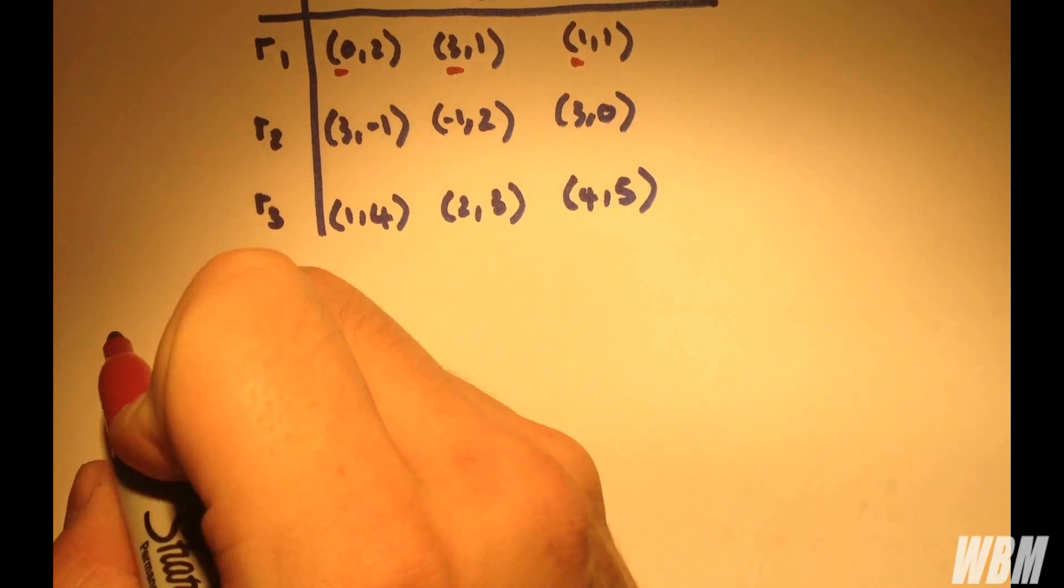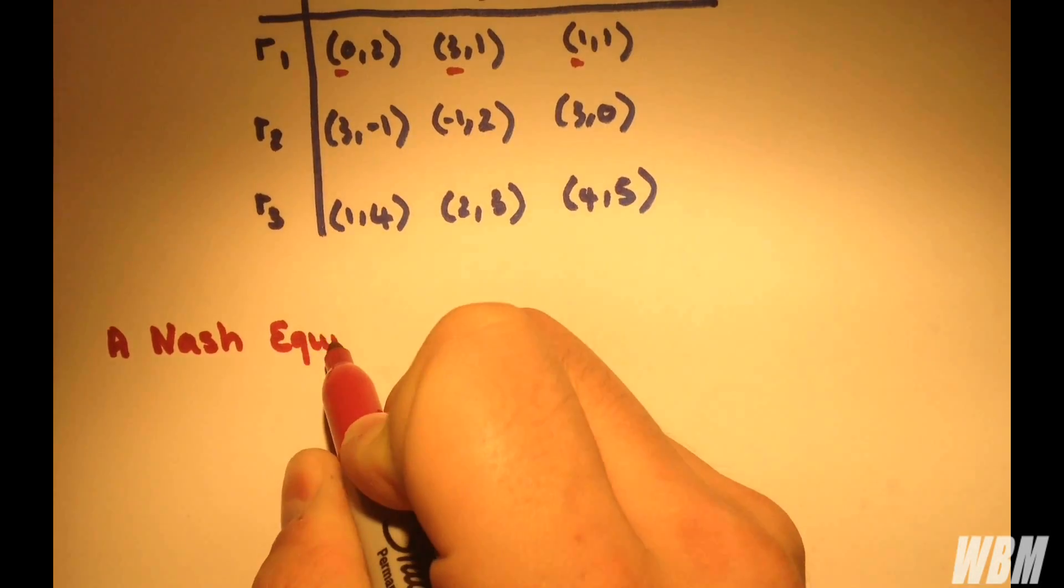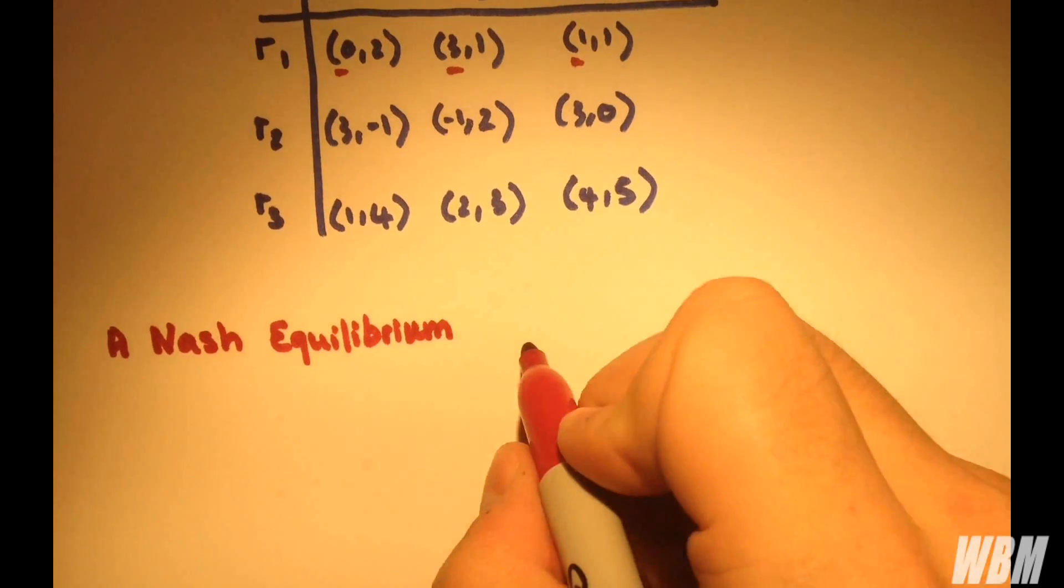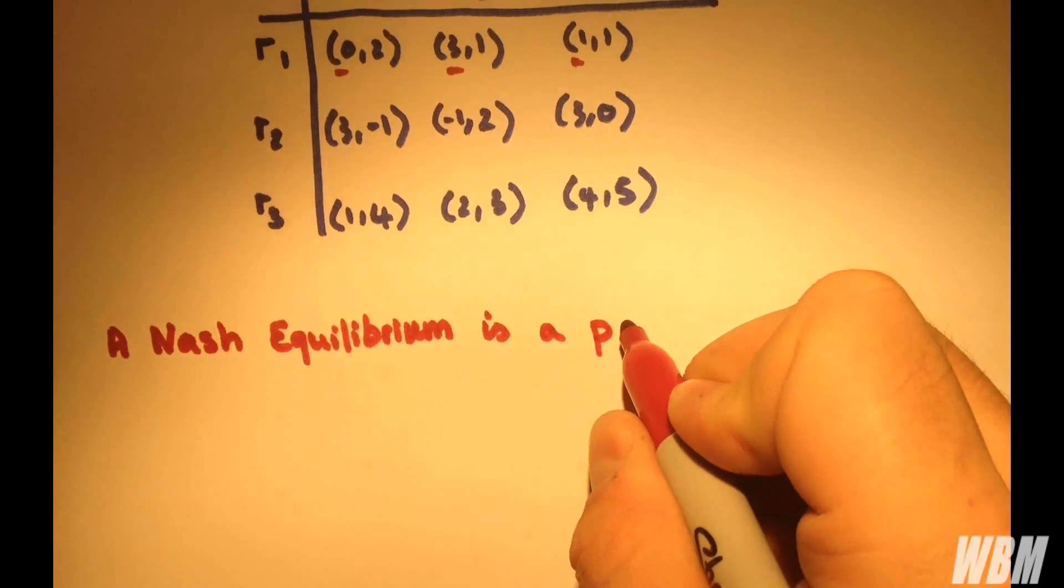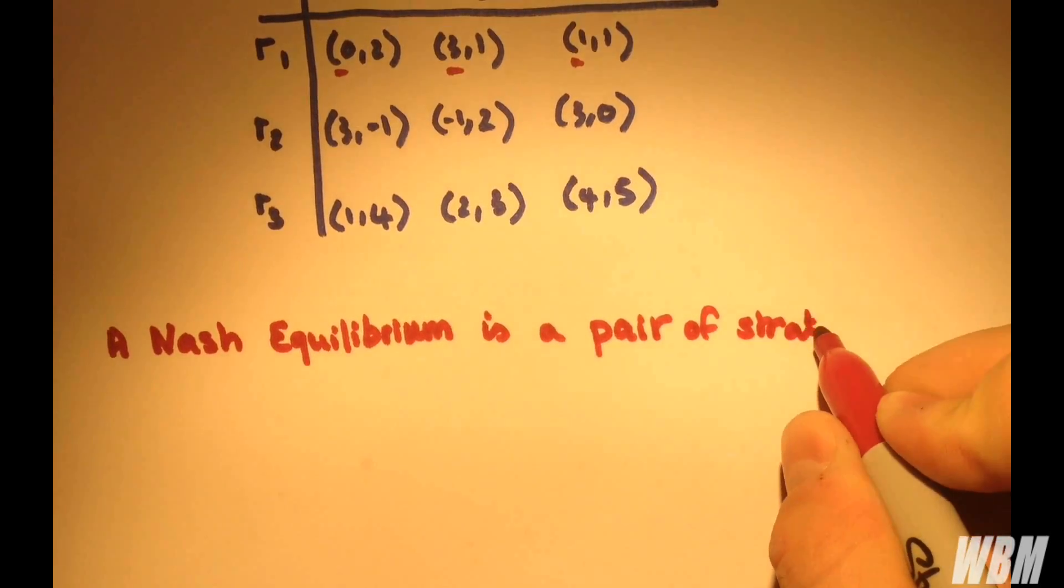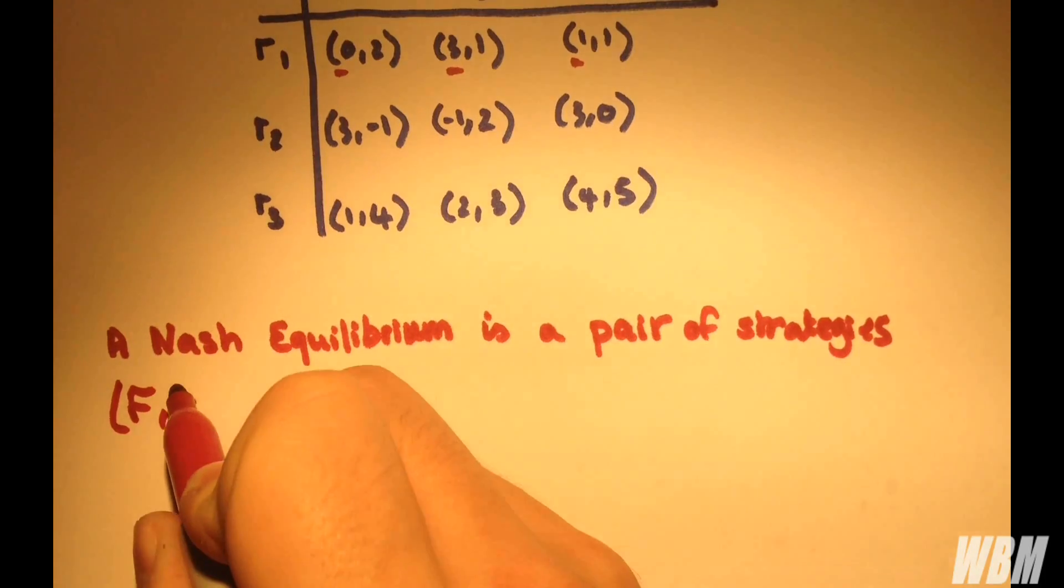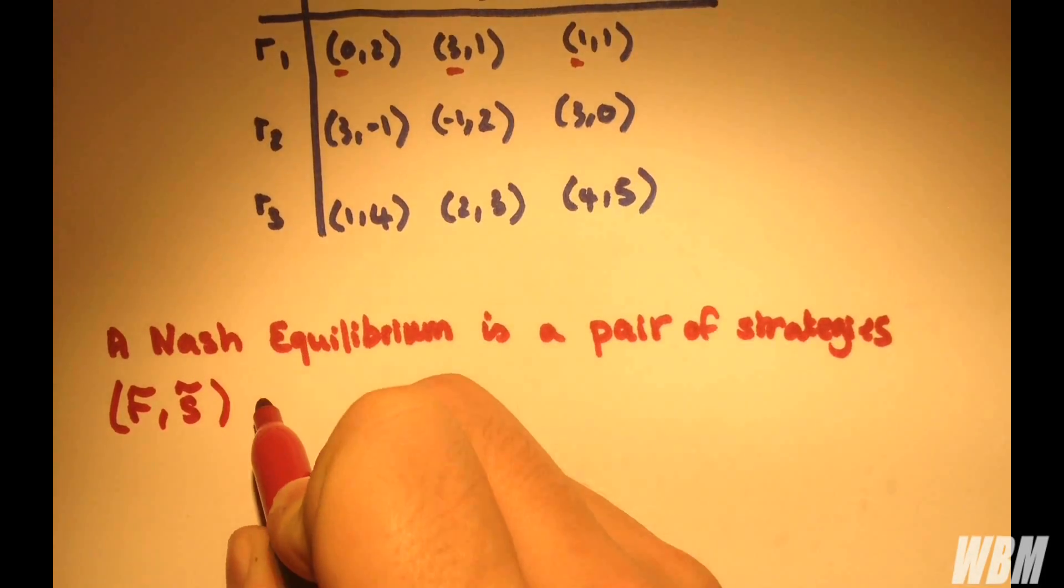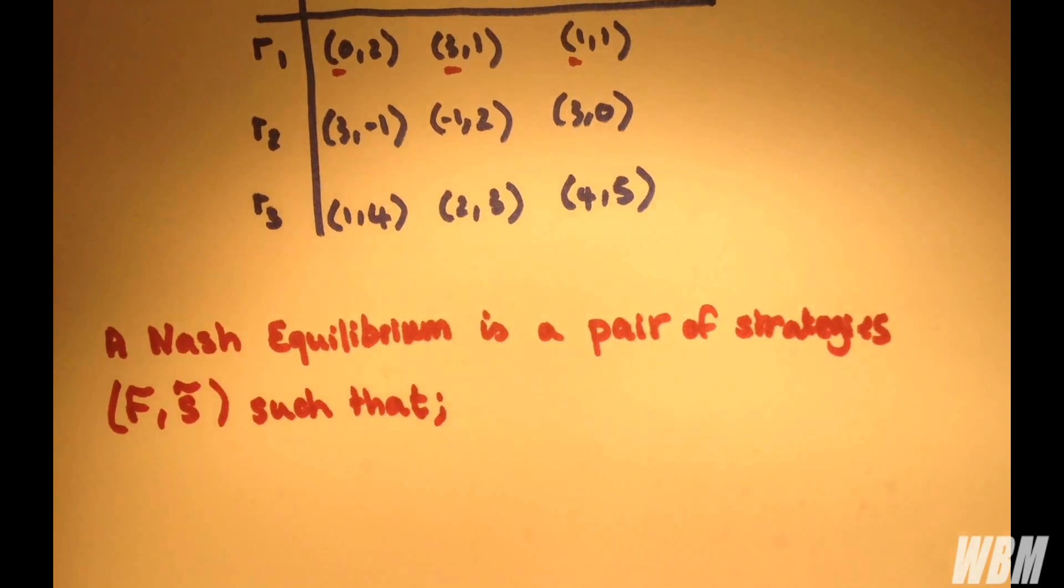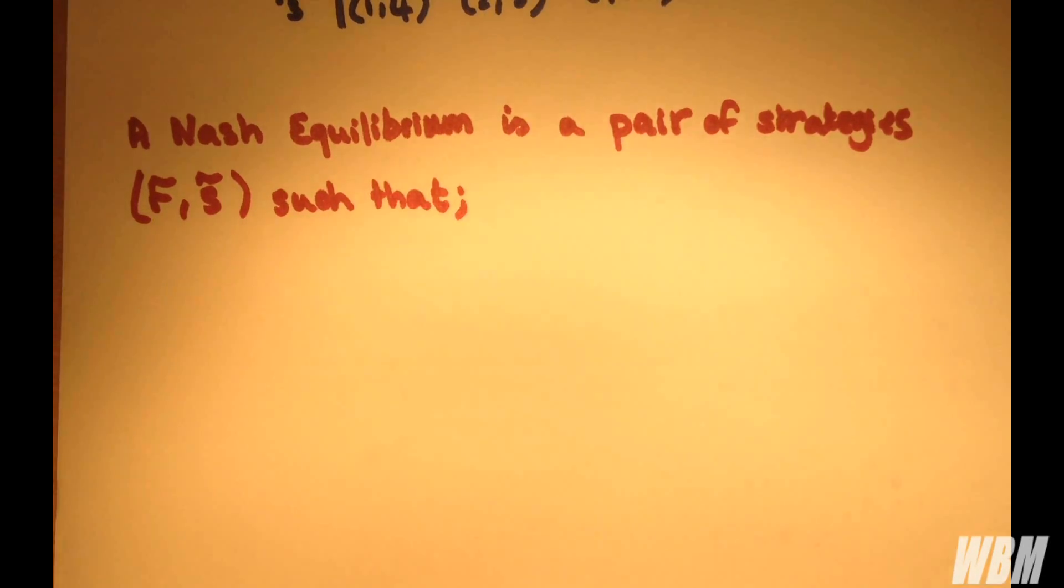So, a pure Nash equilibrium is a pair of strategies, R and S, such that the following hold. Now, this will appear quite formal, but in reality, when I've done an example, it'll make a lot of sense. So, bear with me.